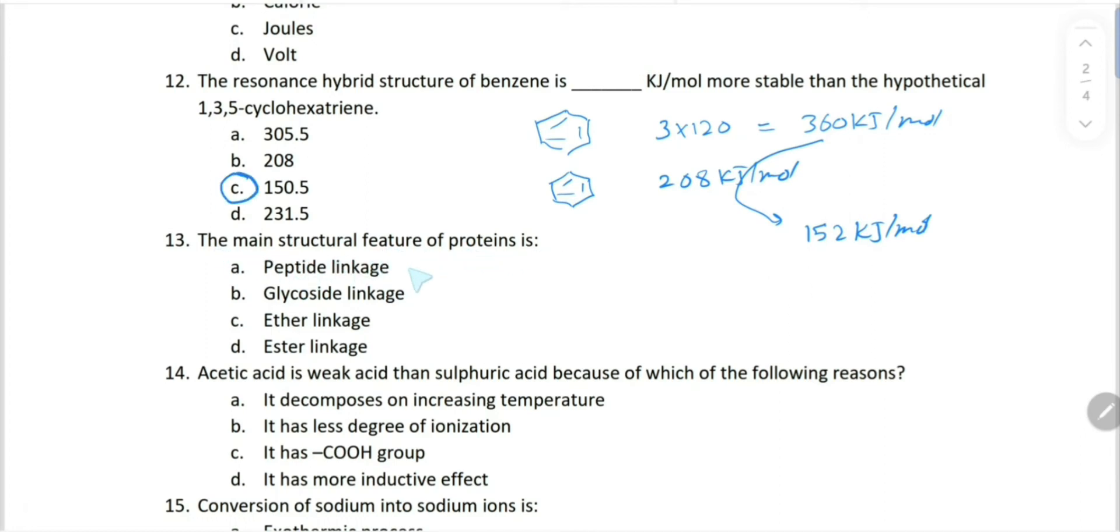The main structural feature of protein is peptide linkage. Yes, proteins are formed by peptide linkage. Glycosidic linkage is found in carbohydrates. Ether linkage you'll find in the ring structure of carbohydrates. And ester linkage is in lipids.